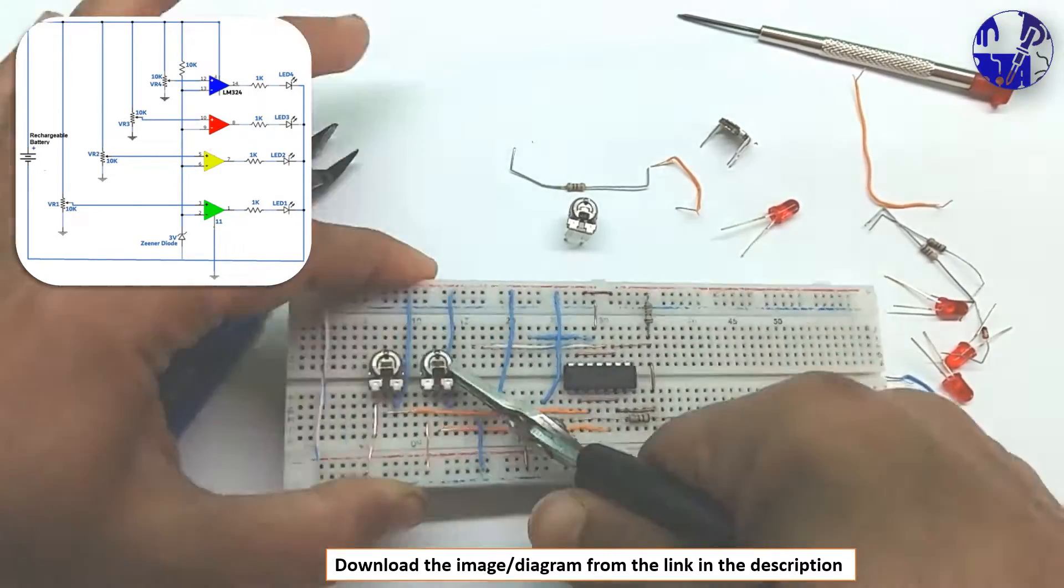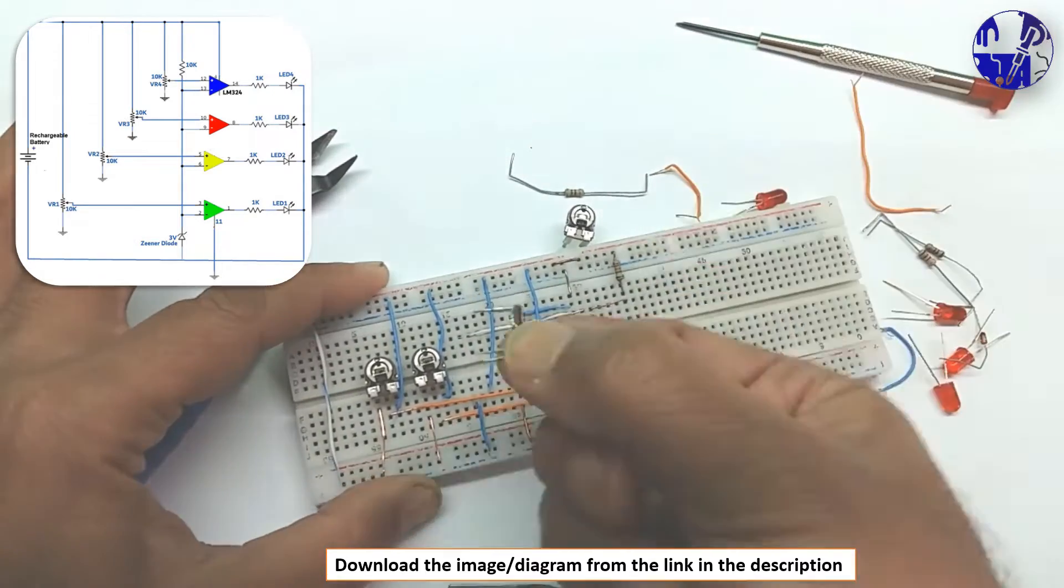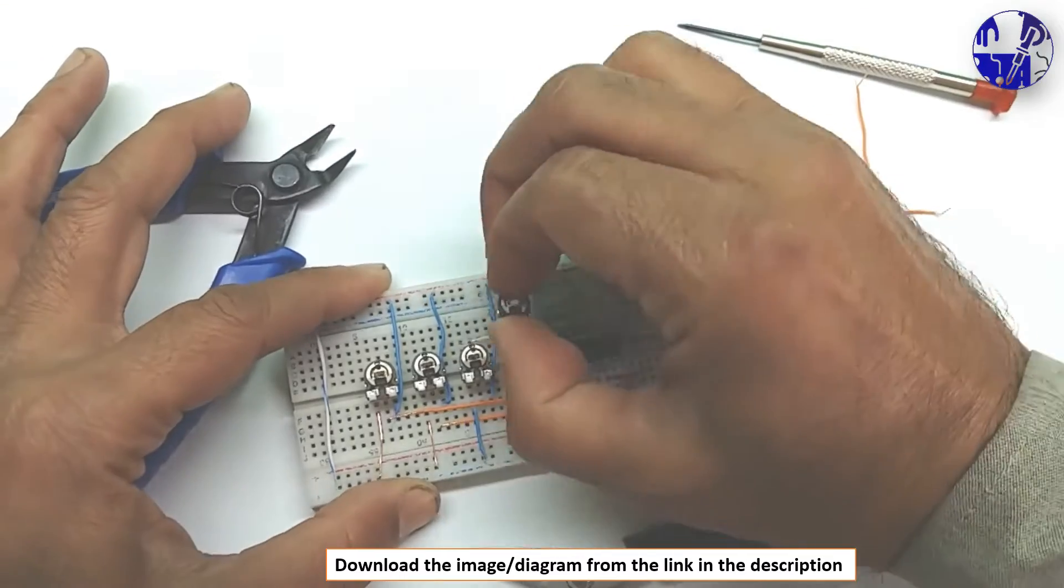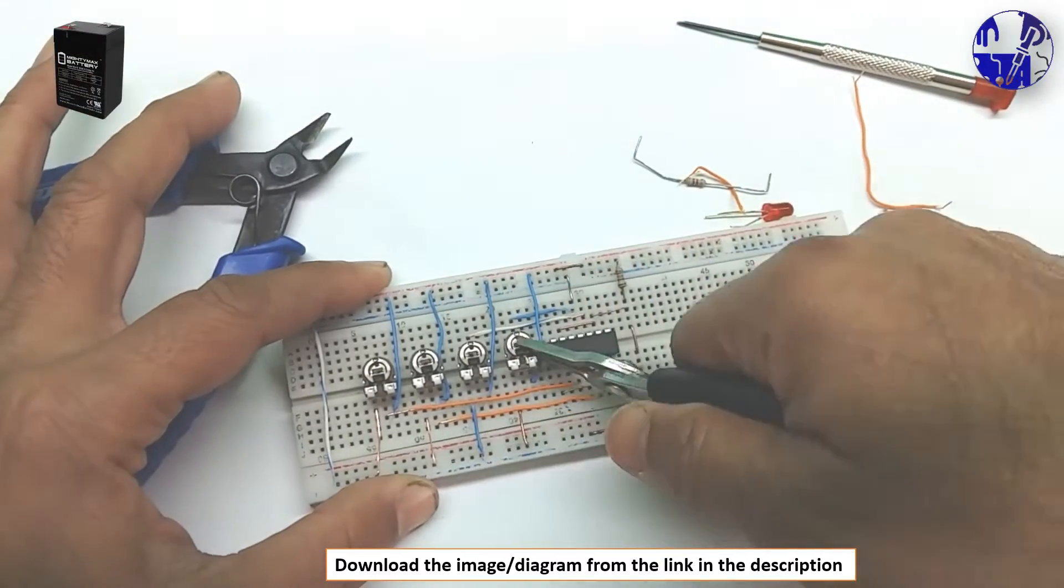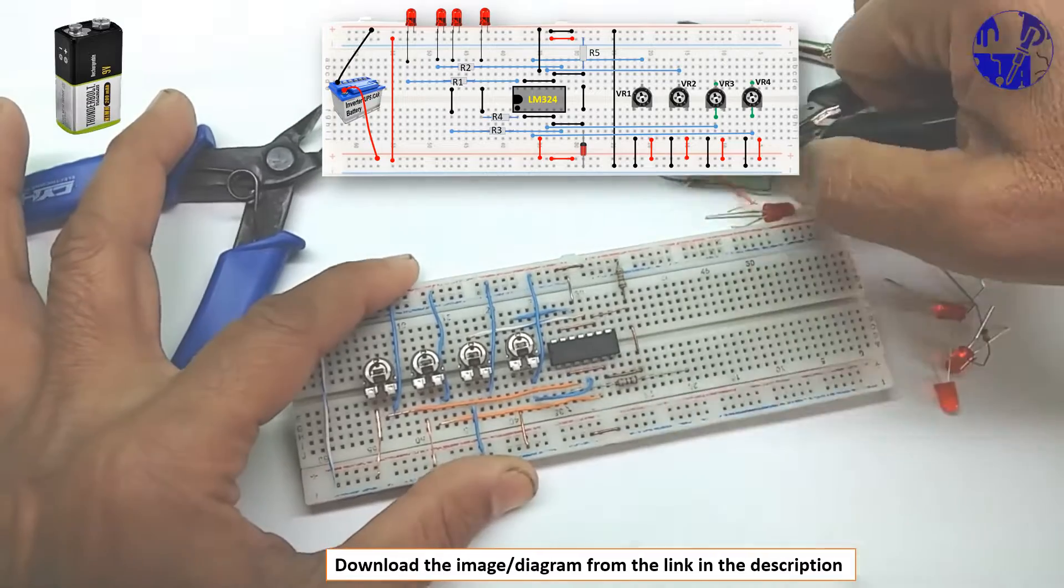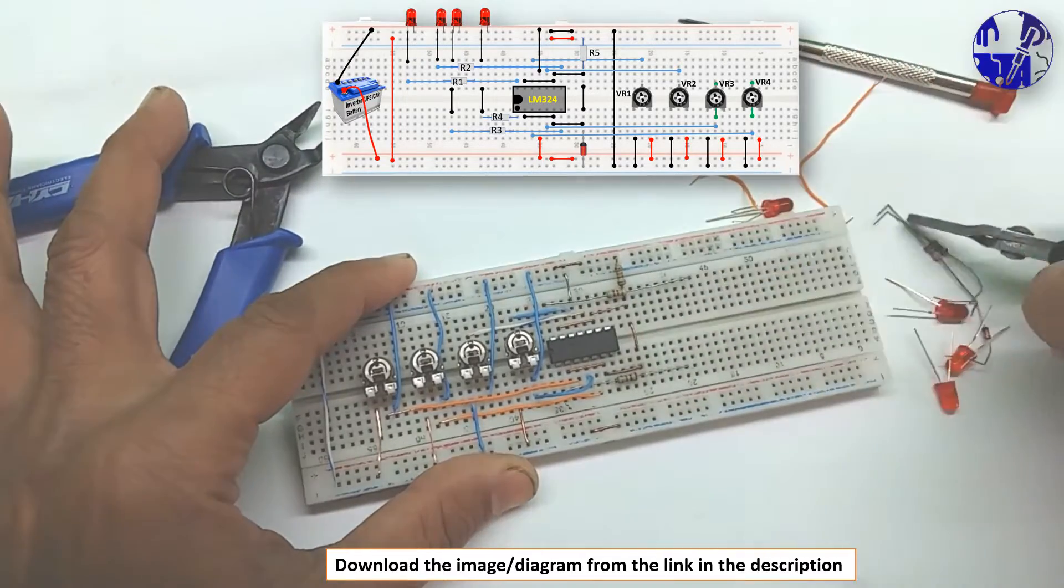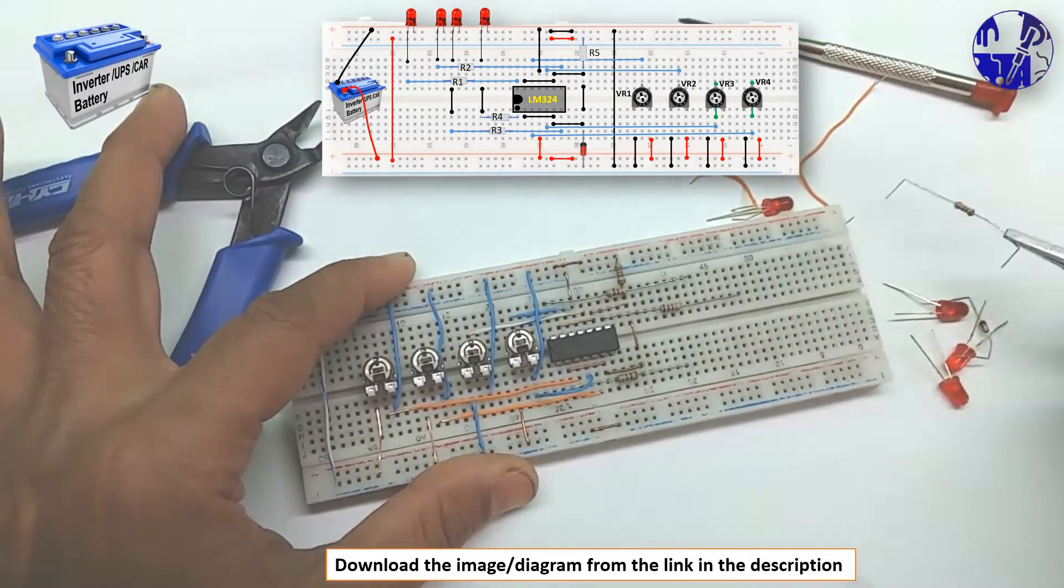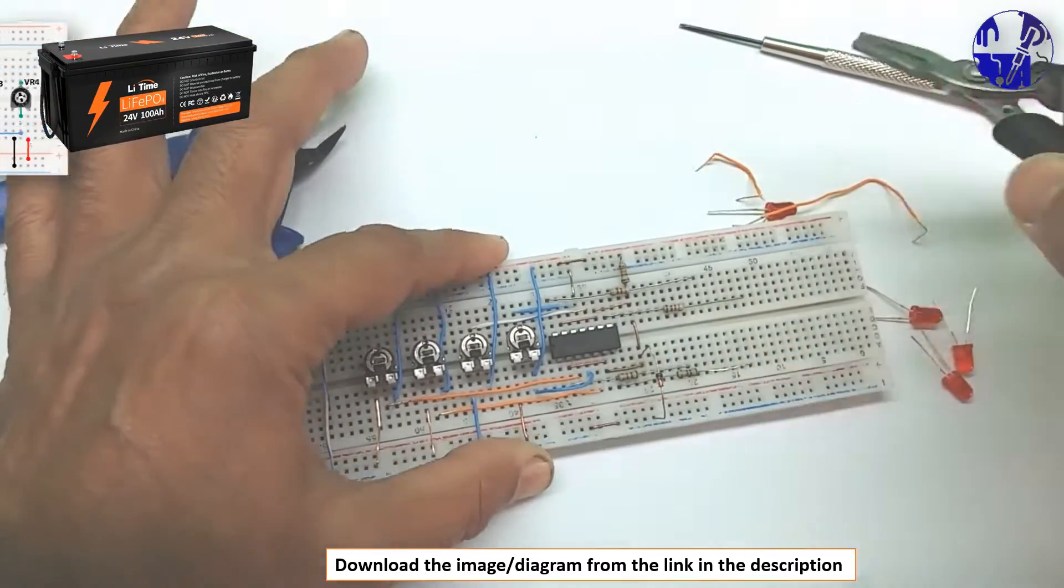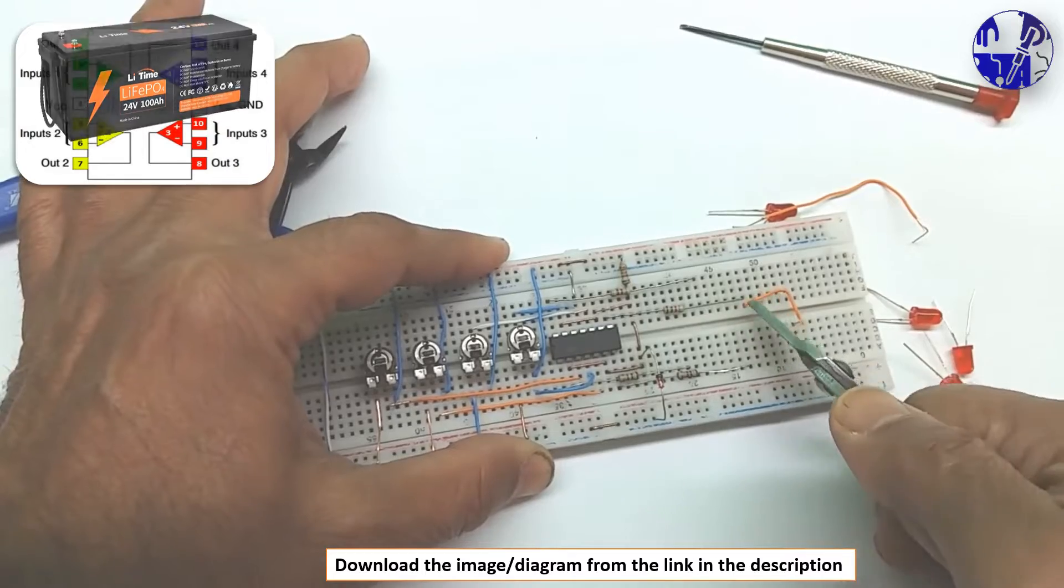This universal battery level indicator design accommodates 6 volt, 9 volt, 12 volt, and 24 volt batteries. Simply adjust the voltage settings using the four variable resistors in the circuit for each battery type.